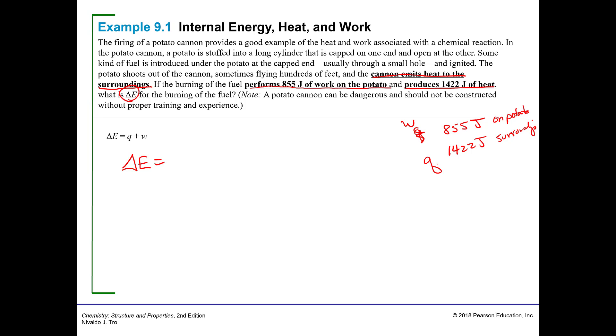So if I perform 855 joules of work on the potato, then I use that much. And I am emitting heat, which means I'm also losing that, so that's a negative 1422 joules. So Q, sorry, W plus Q, they're both negative, so that means that they're going to be added together, and I'm going to come up with a negative 2277 joules.